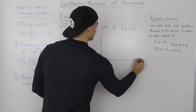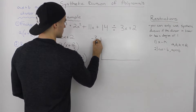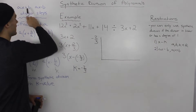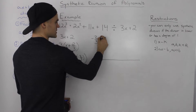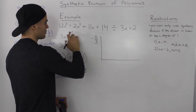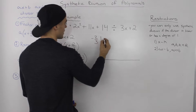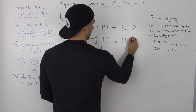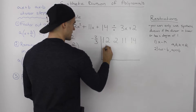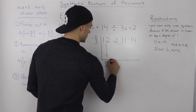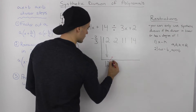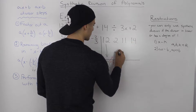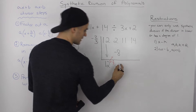Step 3: once we have our k value, we perform synthetic division as before. With k = −2/3, we draw the chart. Note that k will always be a fraction when dealing with an ax ± b divisor. We place −2/3 in the k position, then write the leading coefficients of the dividend: 12, 2, 11, and 14. The first term comes down: 12. Then 12 × (−2/3) = −8. And 2 + (−8) = −6.